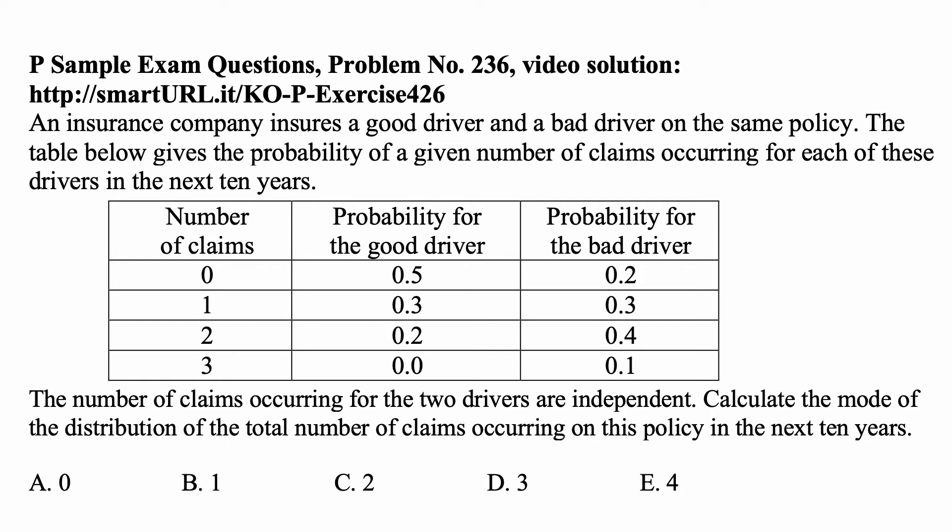Number of claims zero: probability for the good driver is 0.5, probability for the bad driver is 0.2. Number of claims of one: probability for the good driver is 0.3, probability for the bad driver is 0.3. Number of claims of two: probability for the good driver is 0.2, probability for the bad driver is 0.4. Number of claims of three: probability for the good driver is zero, probability for the bad driver is 0.1. The number of claims occurring for the two drivers are independent. Calculate the mode of the distribution of the total number of claims occurring on this policy in the next 10 years.